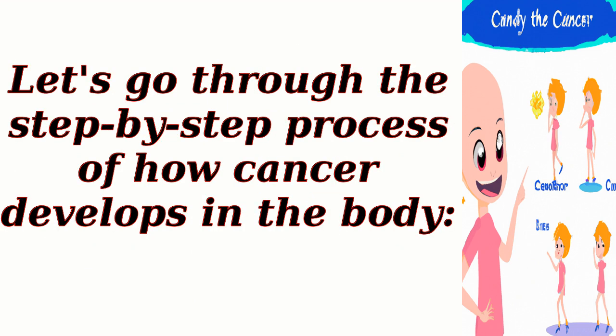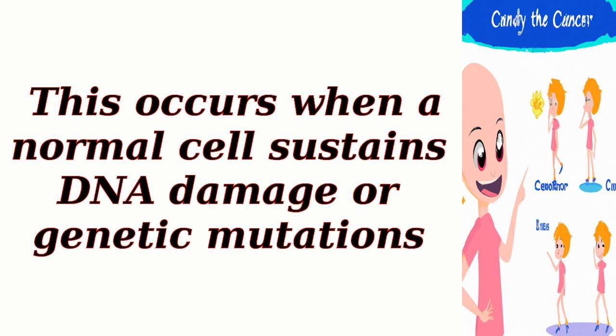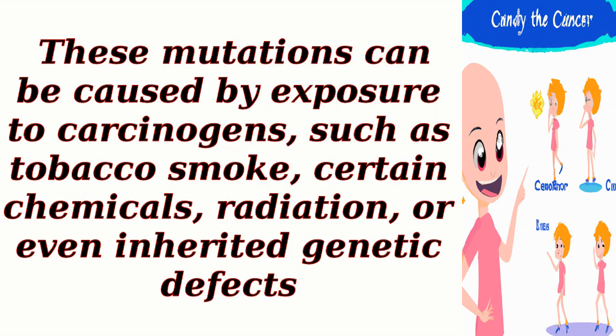Let's go through the step-by-step process of how cancer develops in the body. The first step is initiation. This occurs when a normal cell sustains DNA damage or genetic mutations. These mutations can be caused by exposure to carcinogens, such as tobacco smoke, certain chemicals, radiation, or even inherited genetic defects.